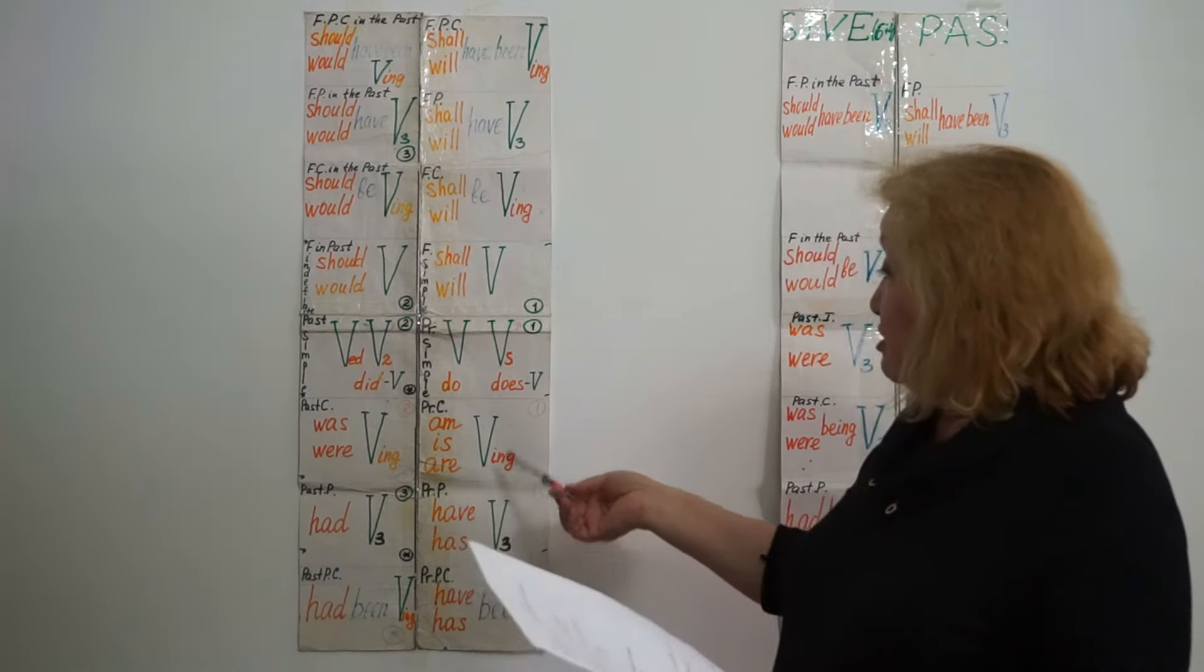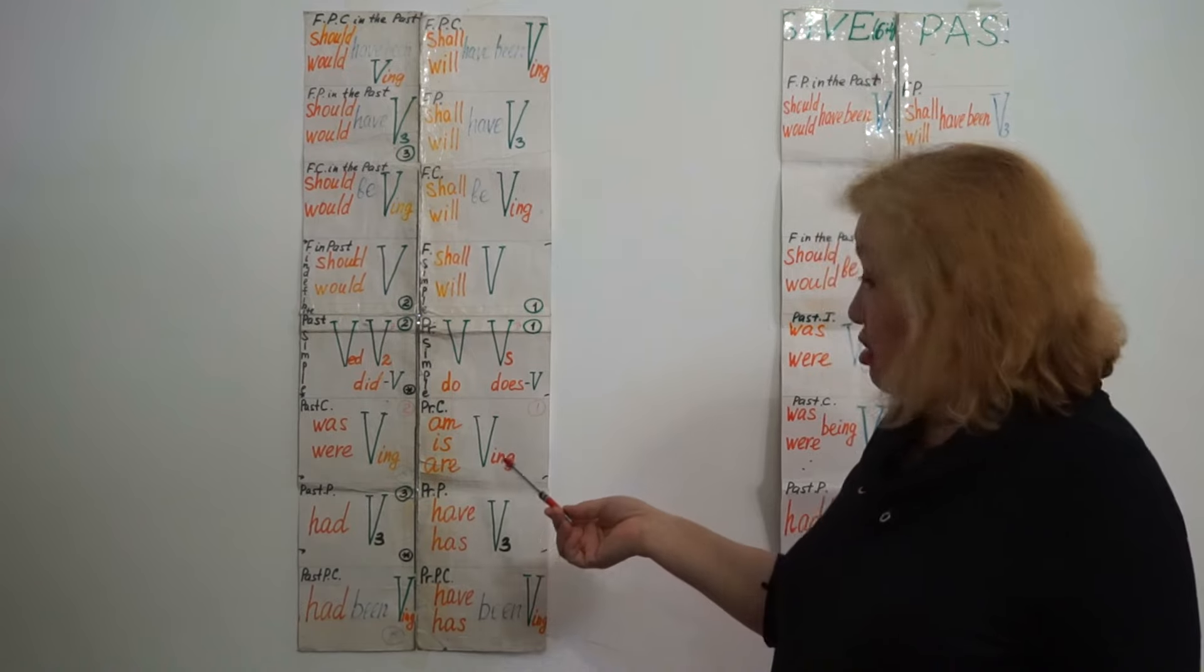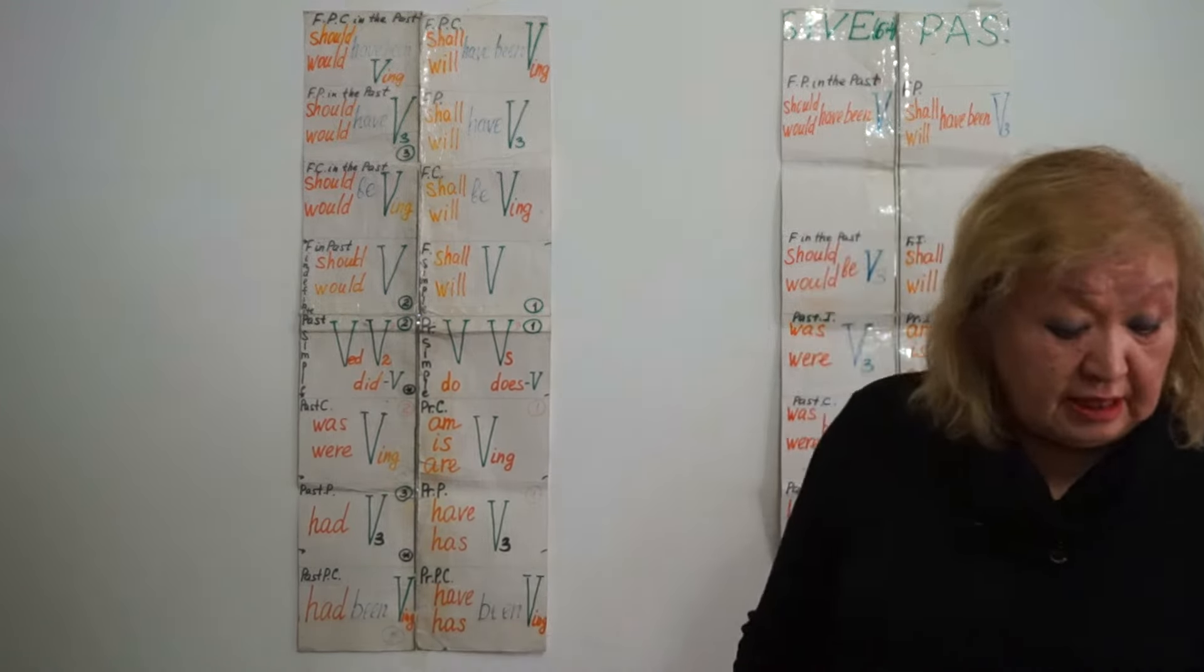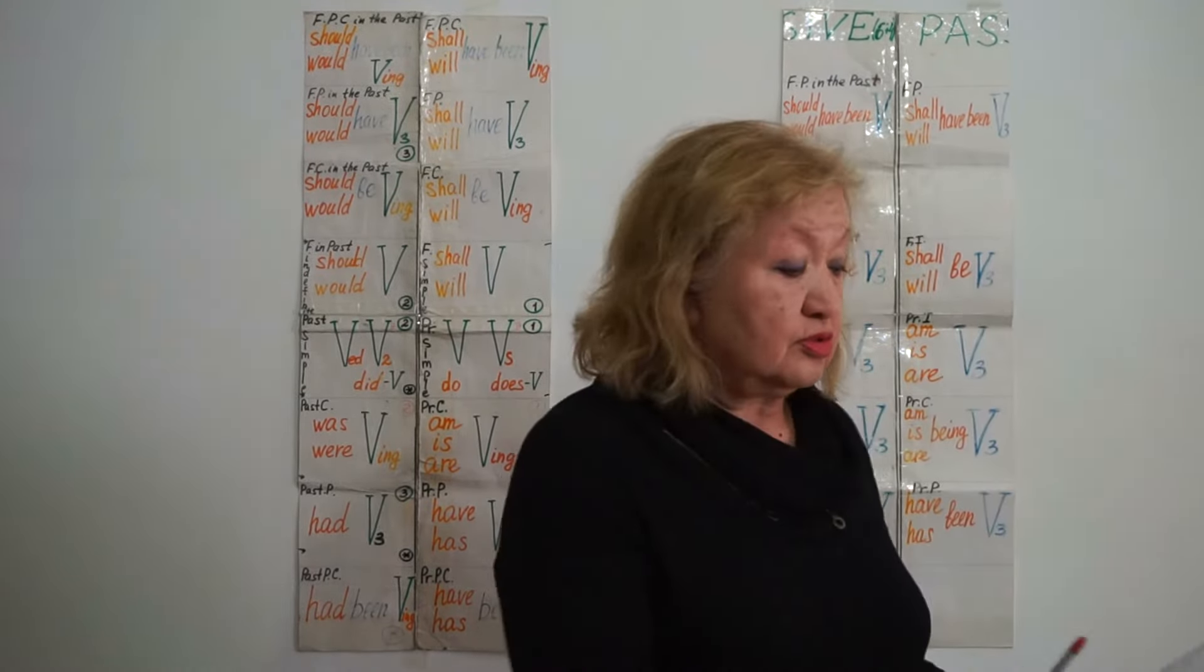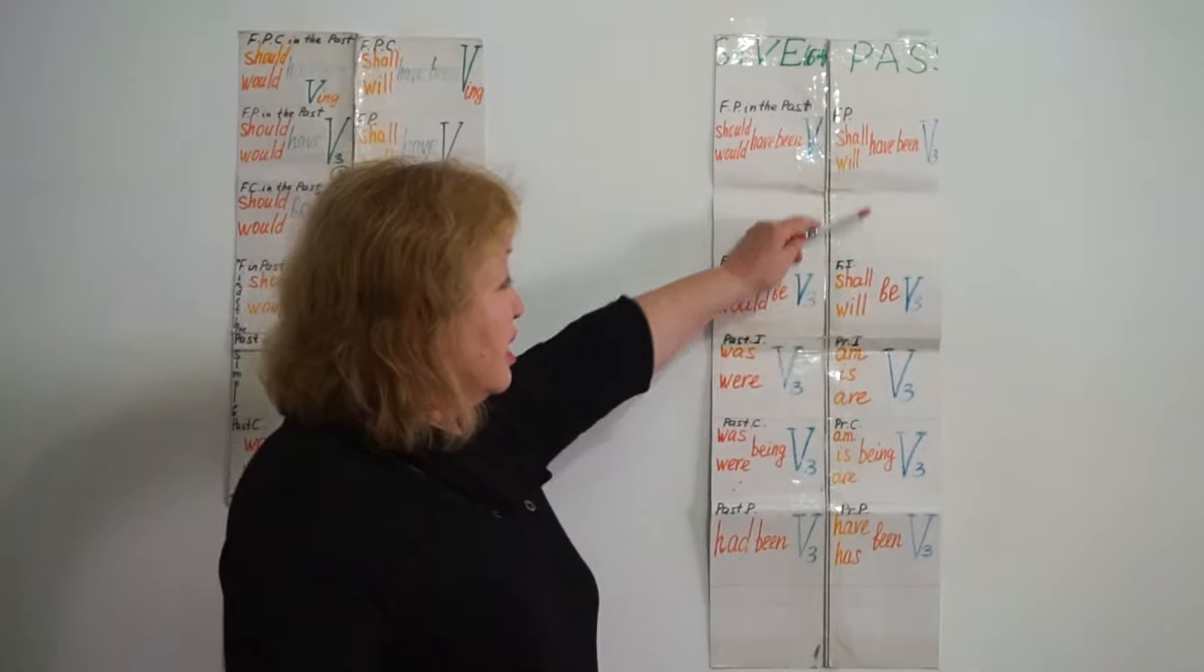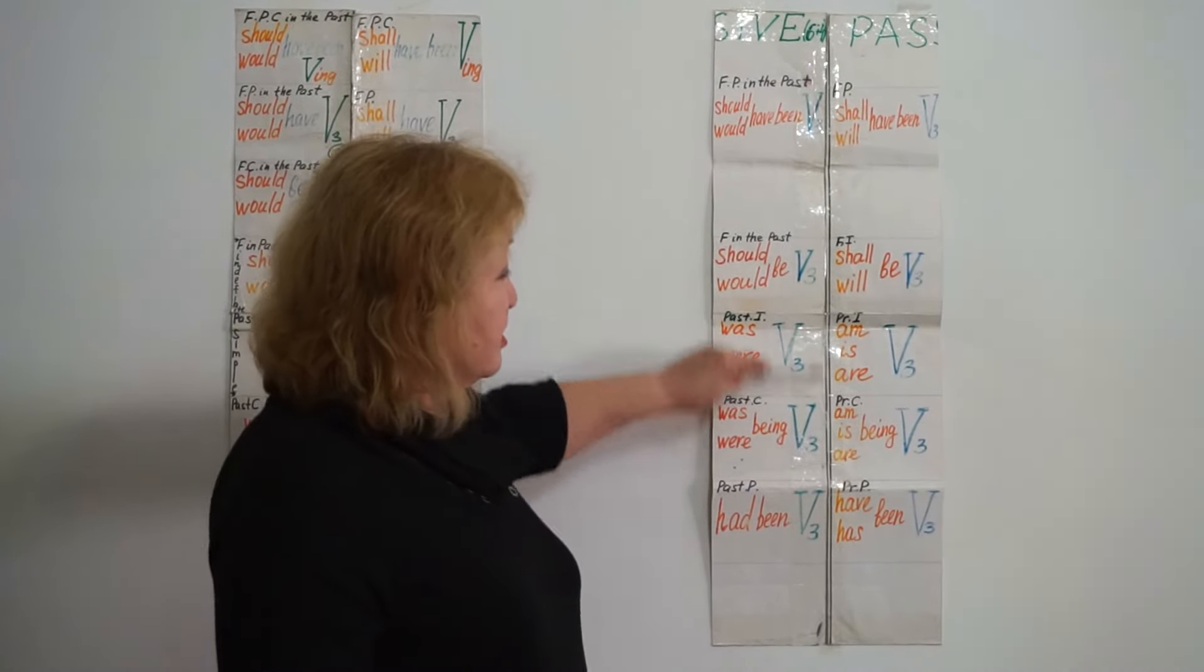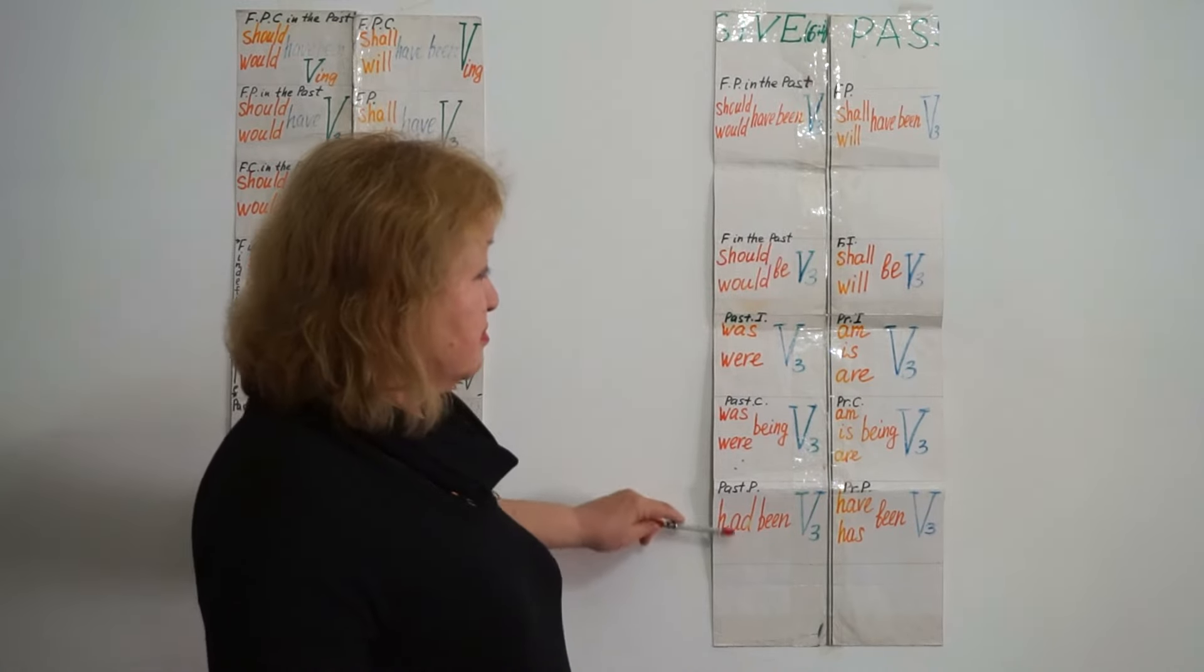Easy to explain that verb to be and to have don't have continuous tenses. And the verb to be helps us to present now passive voice. Passive voice has ten tenses. We write the verb to be in these five tenses. Five in the present and five in the past.